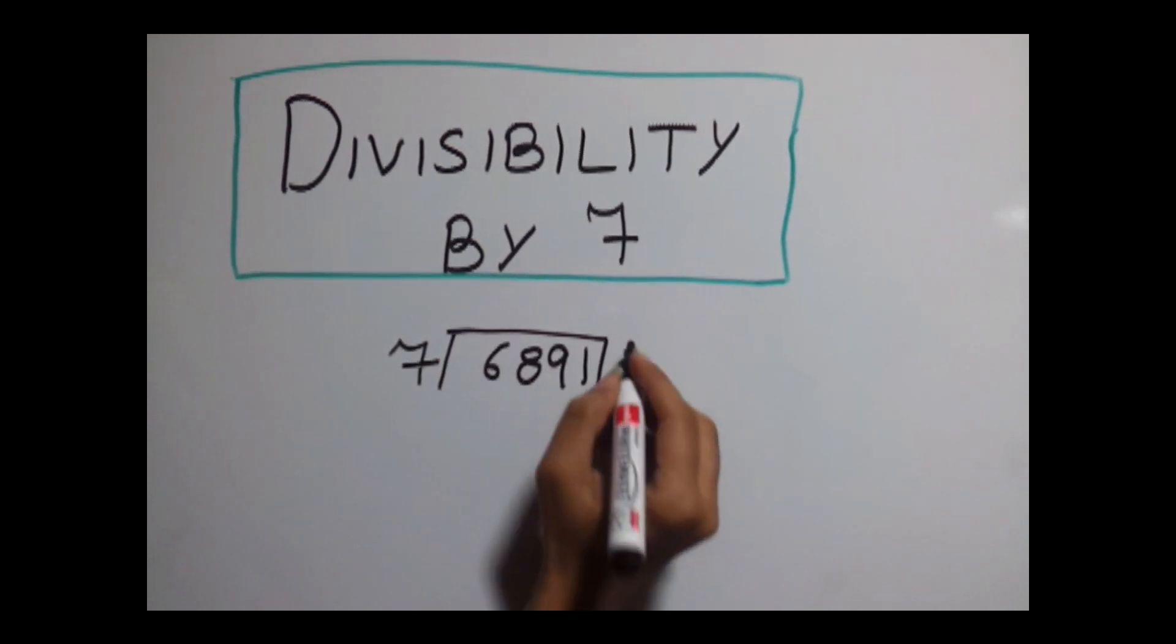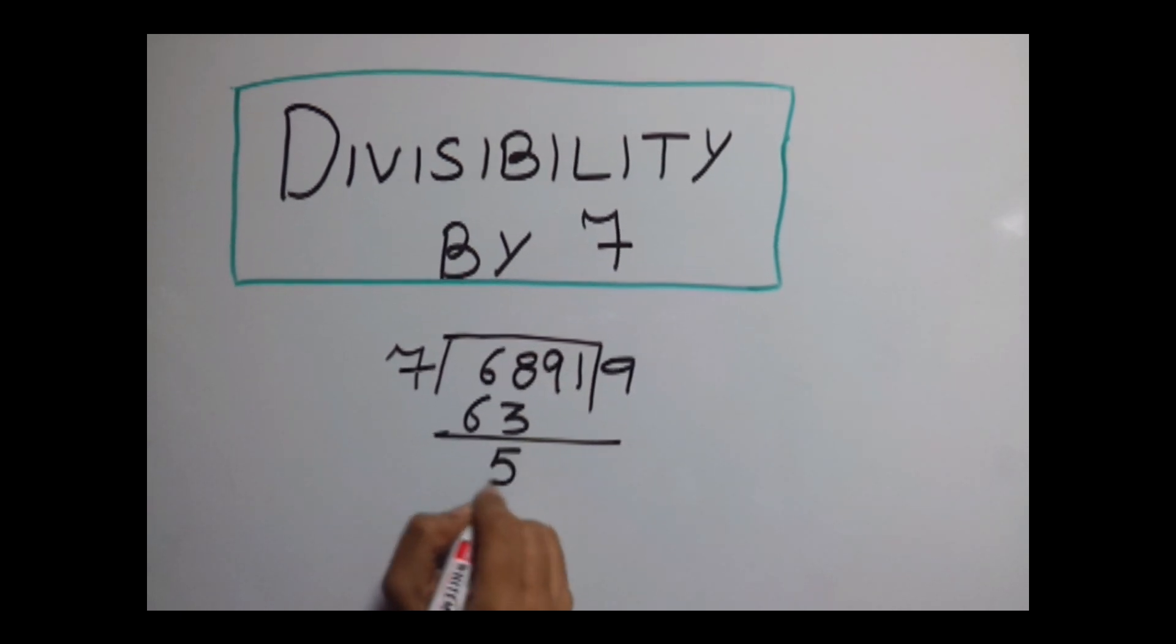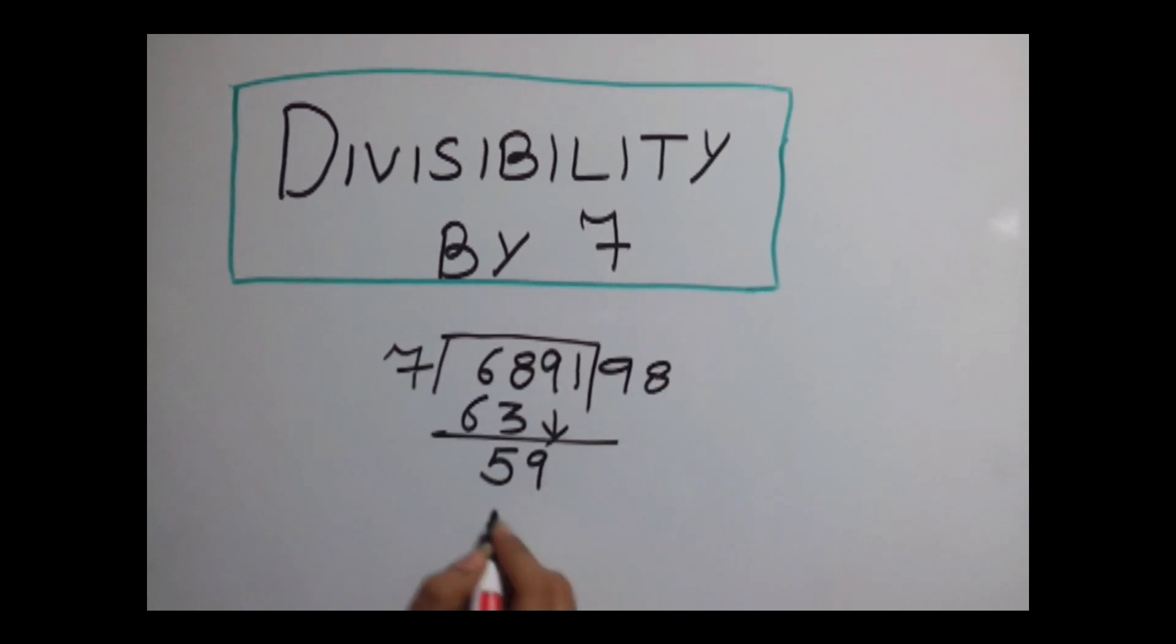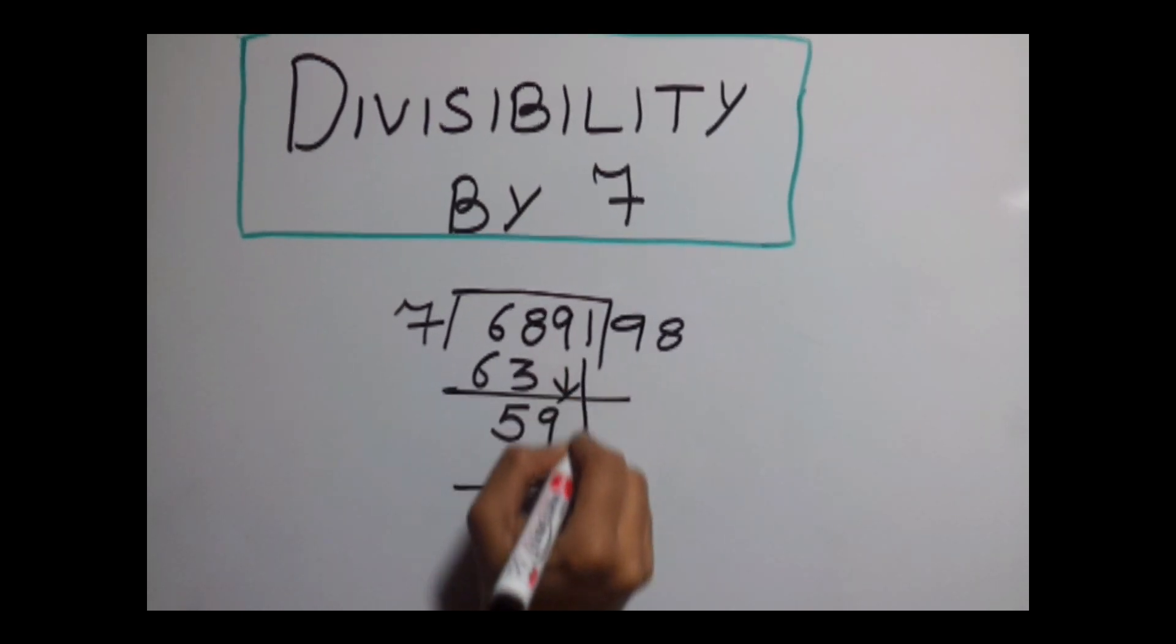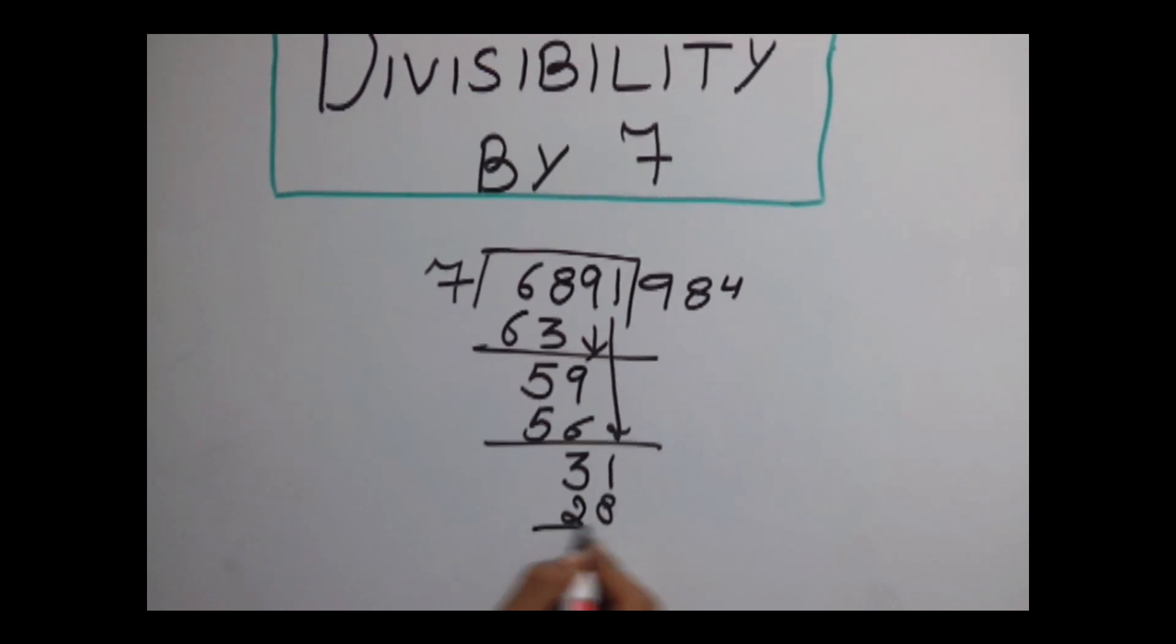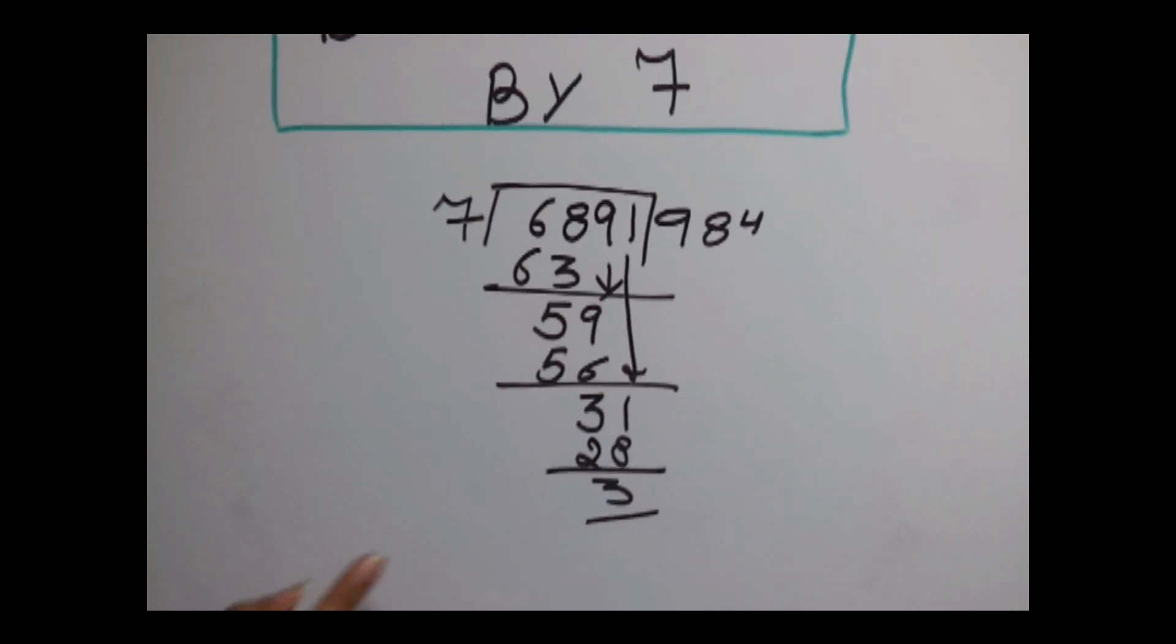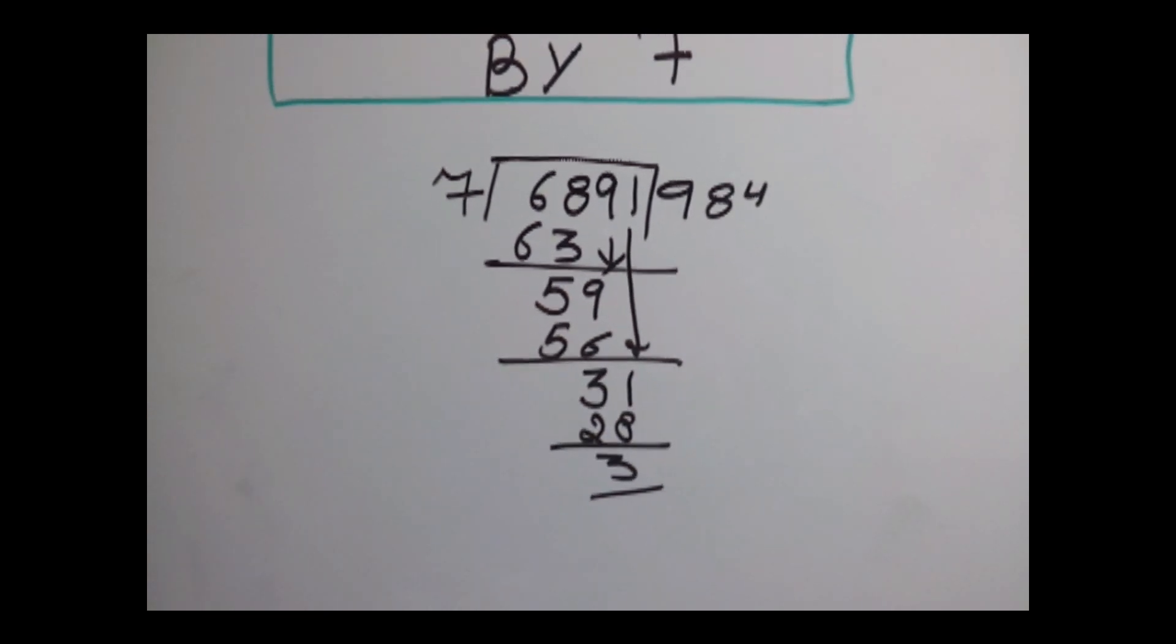So 7 into 9 gives us 63, 5 as a remainder, 9 as a carry. 7 into 8 is 56, again 3 as a remainder and 1 as a carry. 7 into 28, 3 as a remainder. Because we have 3 as a remainder, this means this number is not divisible by 7.